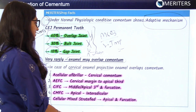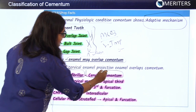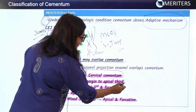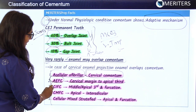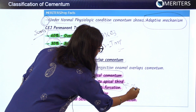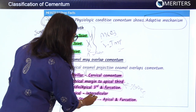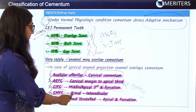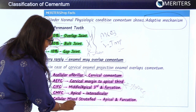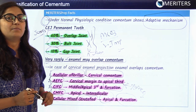Locations of each cementum type in the tooth: acellular afibrillar cementum is present as cervical cementum. Acellular extrinsic fiber cementum is present from the cervical margin to the apical one-third of the root. Cellular intrinsic fiber cementum is present in the middle or apical third and also in the interradicular region. Cellular mixed fibrillar cementum is also present in the apical and interradicular region. Cellular mixed stratified cementum is found in the apical and interradicular region as well.